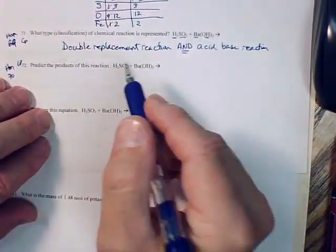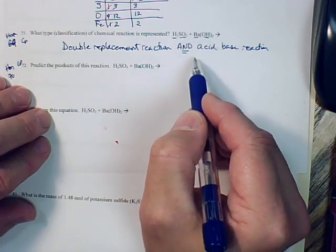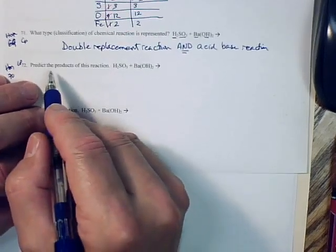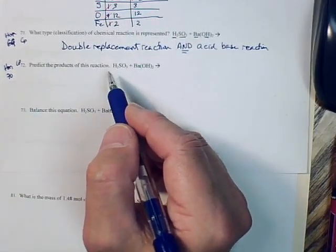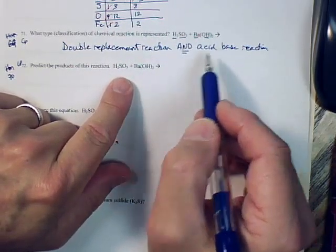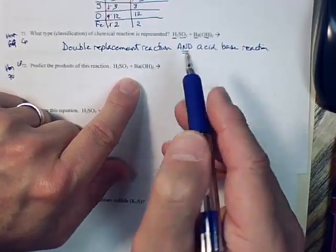We said in the last problem number 71 that this is clearly a double replacement reaction and an acid-base reaction. It's important that you do that first before you try to predict the products. Knowing what kind of reaction it is will help you figure out how the products are going to arrange themselves on the other side of the equation.